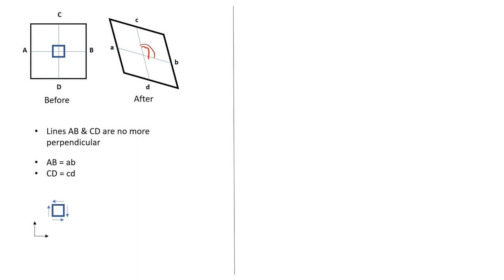In the second case, the square becomes a rectangle. Other ways of interpretation are AB and CD are still perpendicular, which means there is no shear stress.